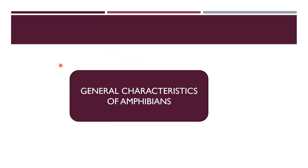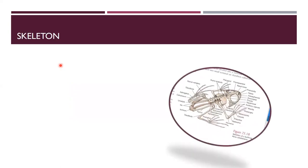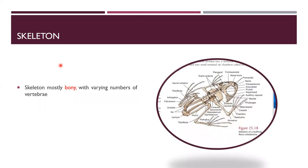First we'll study about the general characteristics of amphibians. Number one is skeleton. The skeleton is mostly bony with varying numbers of vertebrae. The ribs are present in some but absent or fused to the vertebrae in others — for example, in anurans like frogs or toads there are no ribs.